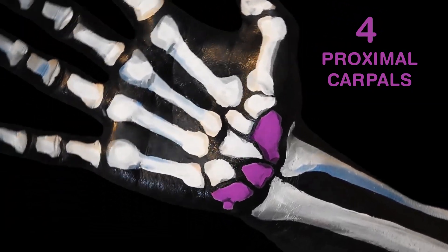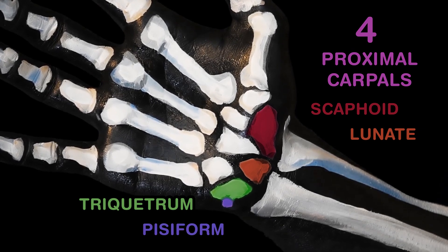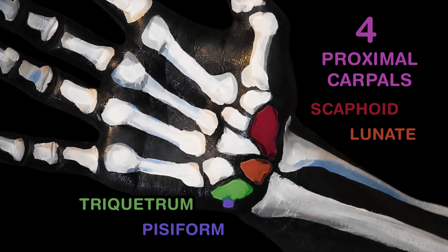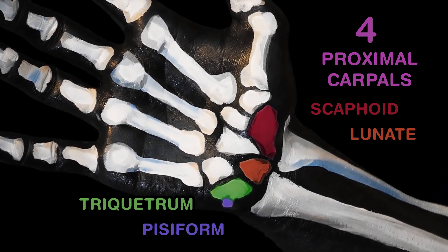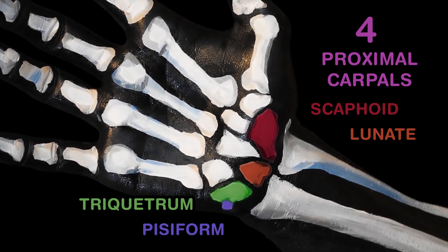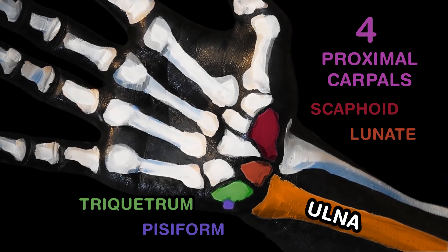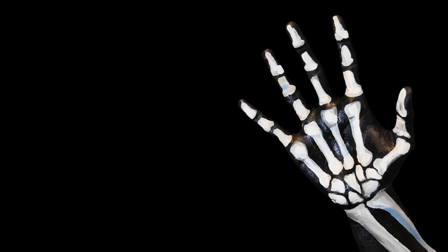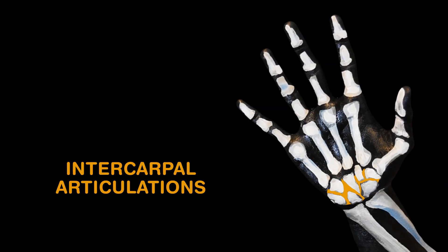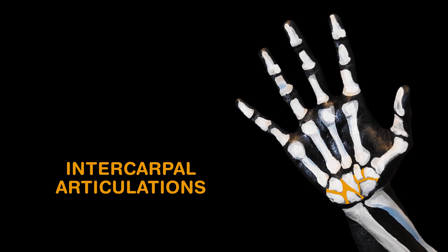The four proximal carpals wrist movements help perform: the scaphoid, lunate, triquetrum, as well as the pisiform. The forearm has two bones — please don't forget this — these bones are the ulna as well as the radius.